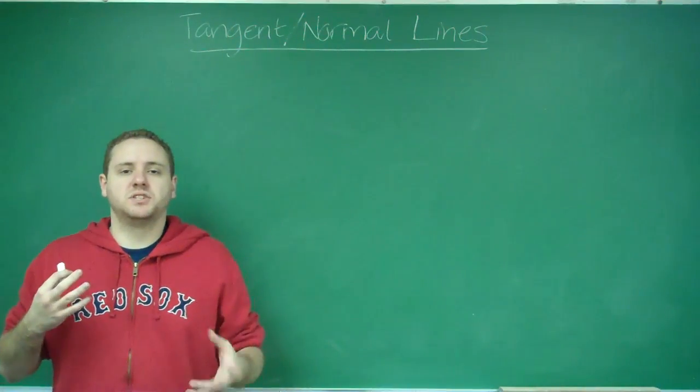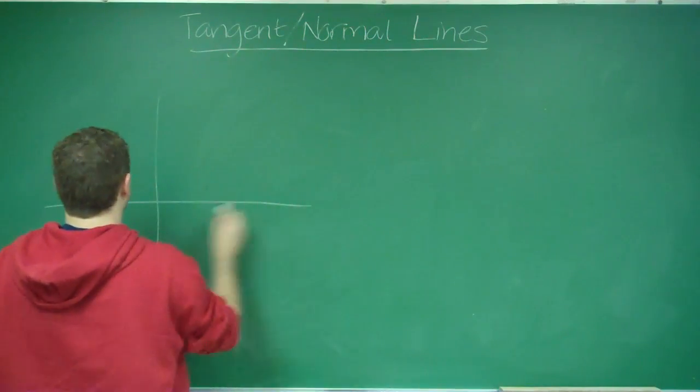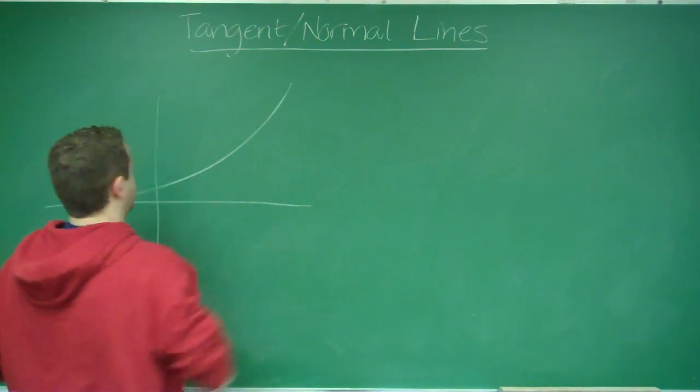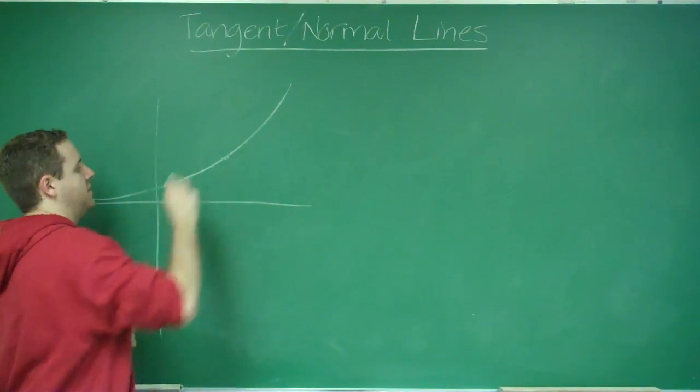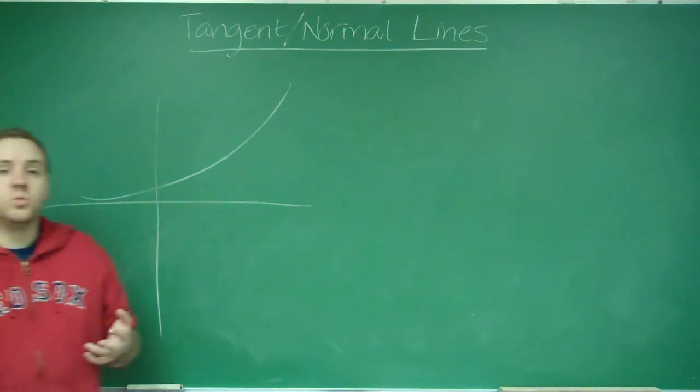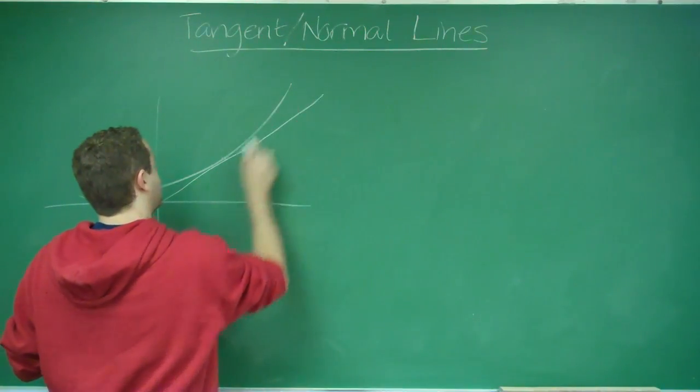First, let's describe the relationship between the tangent line and the normal line. If we had a graph and we had some curve, and I wanted the tangent line at this point, the derivative would give me the slope of that line, which would probably look something like this.